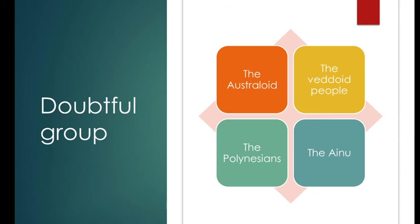The Australoid race has certain physical traits of the Negroid and some of the Caucasoid. The native Australians are black-skinned with very broad noses, but their wavy hair, hairy bodies, and narrow heads make them different from the Negroid, so they are placed in the Doubtful Group.